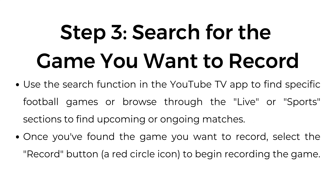Step number three: search for the game you want to record. Use the search function in the YouTube TV app to find specific football games, or browse through the live or sports sections to find upcoming or ongoing matches. Once you've found the game you want to record, select the record button — a red circle icon — to begin recording the game.